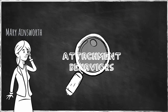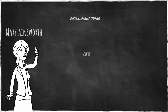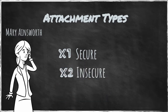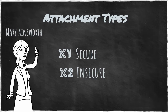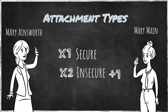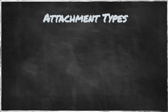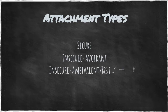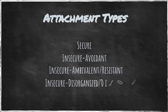Through her research, Mary Ainsworth was able to identify one type of secure attachment and two types of insecure attachment, and later research would reveal a third type of insecure attachment conducted by Mary Main. The four attachment types are: secure attachment, insecure avoidant attachment, insecure ambivalent resistant attachment, and insecure disorganized disoriented attachment.